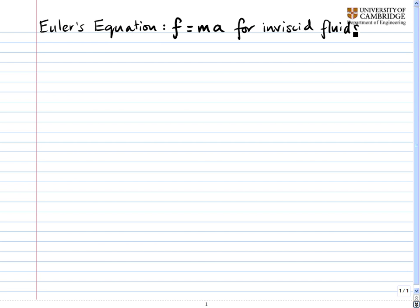Euler's equation is just F equals mA for inviscid fluids. Inviscid just means that there is no viscosity. And once we have the concept of the material derivative, it's actually quite easy to derive Euler's equation.